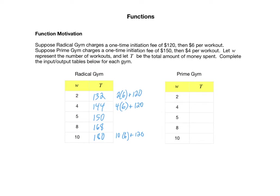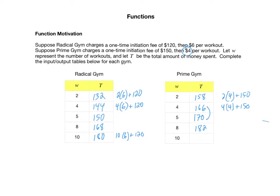Now let's look at Prime Gym with the same number of workouts. The initiation fee is $150 and it costs $4 per workout. For two workouts: $4 twice plus $150 gives $158. For four workouts: $4 four times plus $150 gives $166. Going up by one workout adds $4, giving $170. Three more workouts adds $12, giving $182. Then two more adds $8, giving $190.